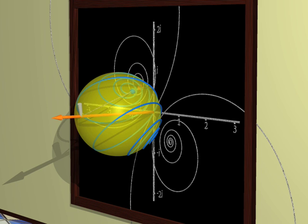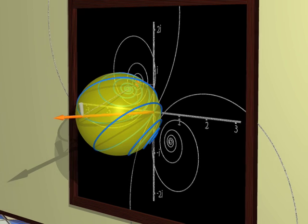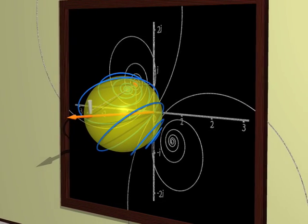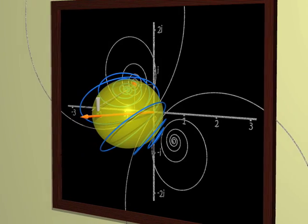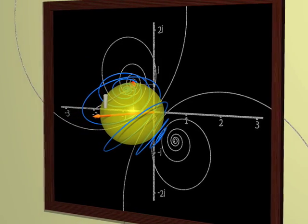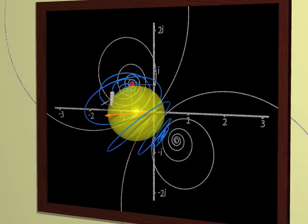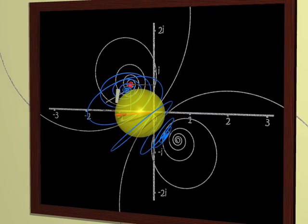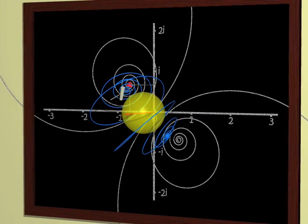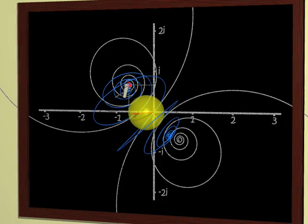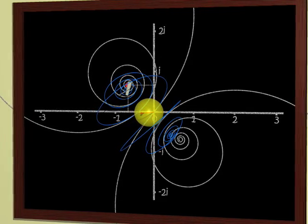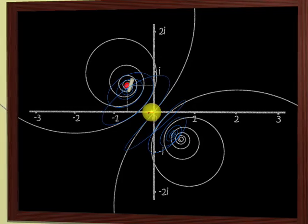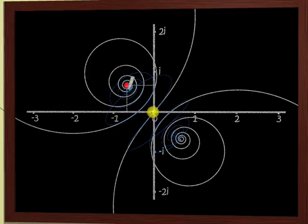Therefore, mathematicians say that the sphere is a complex projective line. Why line? Because one needs only one number to describe its points. Why complex? Because this number is complex. Why projective? Because we added a point at infinity using the projection. Aren't mathematicians strange when they try to tell us that the sphere is a straight line?